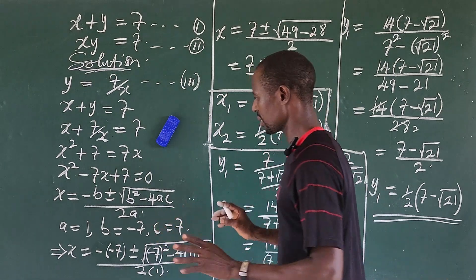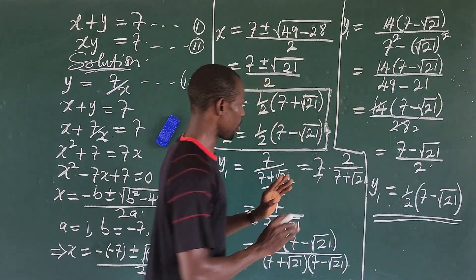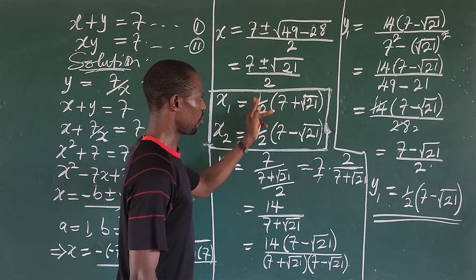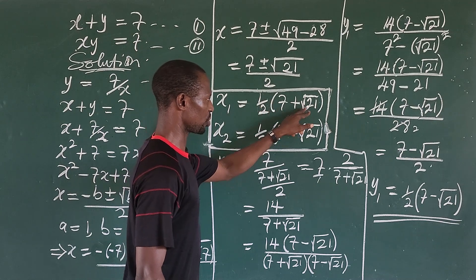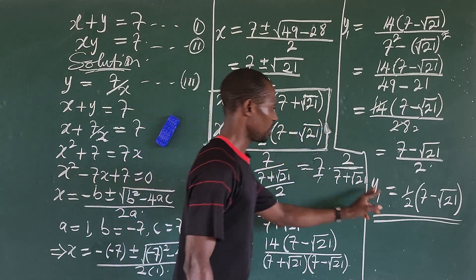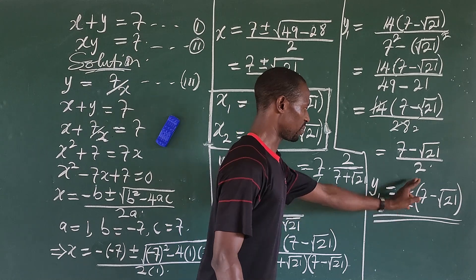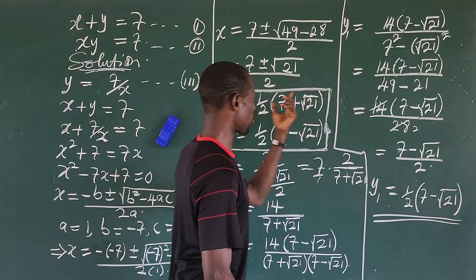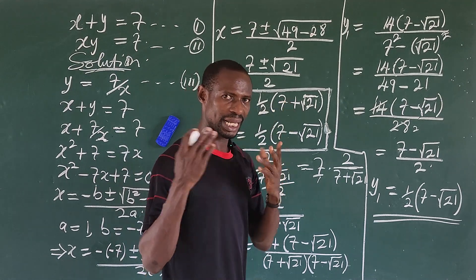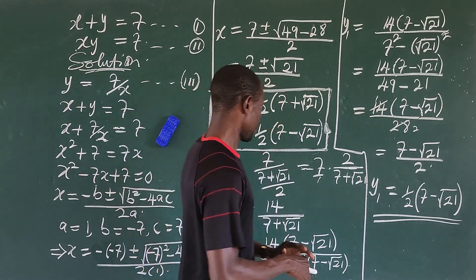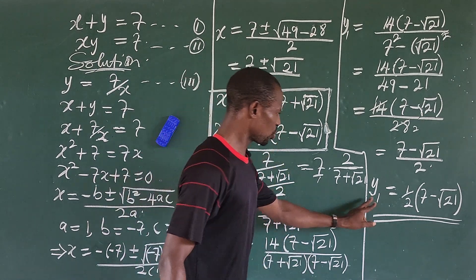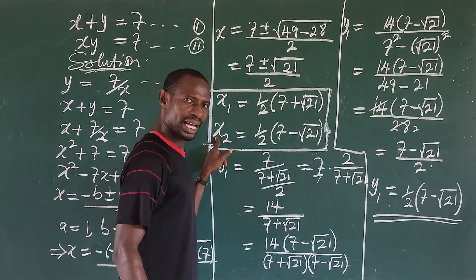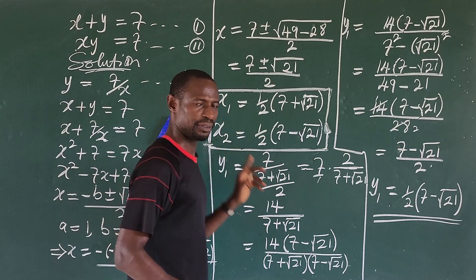Notice that x₁ = (7 + √21)/2 and y₁ = (7 − √21)/2 — y₁ is the conjugate of x₁. This tells us that y₂ will be the conjugate of x₂, but let's verify by solving directly.